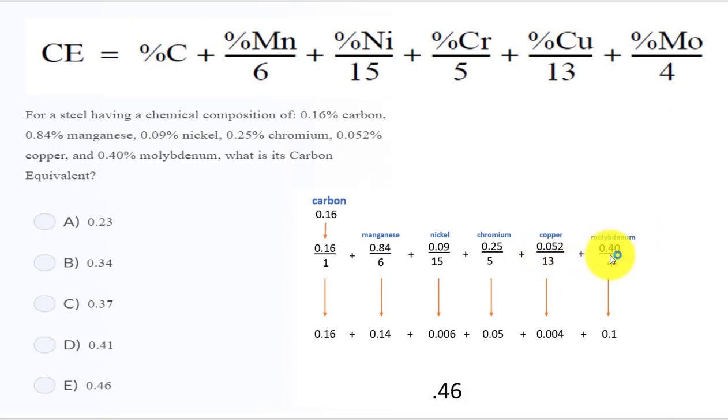So when you do the math: 0.16 divided by 1 you get 0.16, 0.84 divided by 6 you get 0.14, 0.09 divided by 15 you get 0.006, 0.25 divided by 5 you get 0.05, 0.052 divided by 13 you get 0.004, and molybdenum 0.40 divided by 4 you get 0.1.